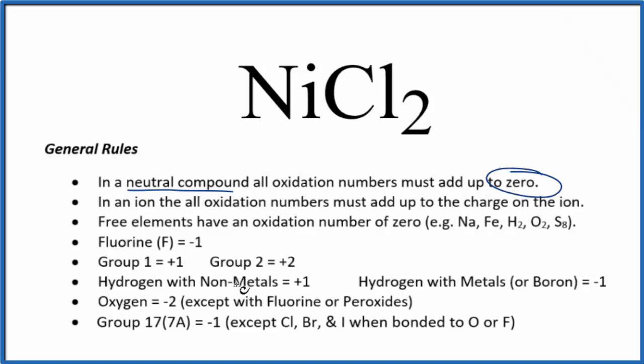As we look at our rules, we can see that group 17, sometimes called 7A, chlorine is in group 17, that's the halogens. Those have an oxidation number of minus 1, with a few exceptions. Nickel's not an exception.